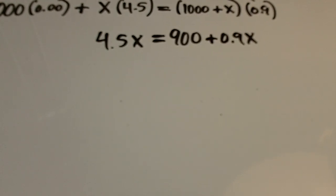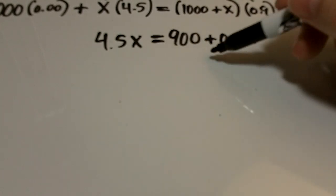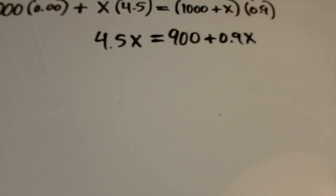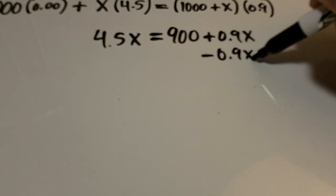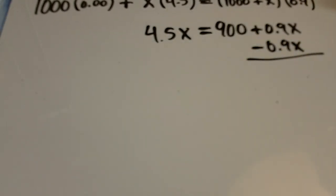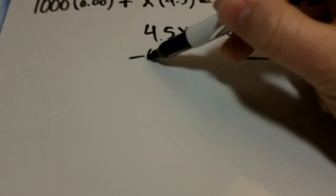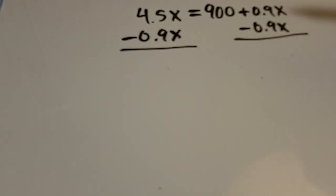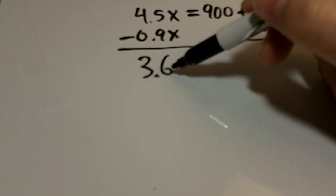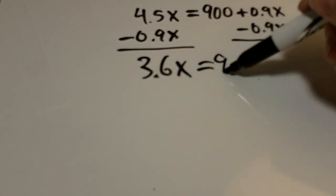We're going to further factor out this equation to figure it out. We need to get all the x's on one side of the equation. So we're going to subtract 0.9x from this side. And because we're doing that we have to also do it from this side. So when we do that what we get is 3.6x equals 900.